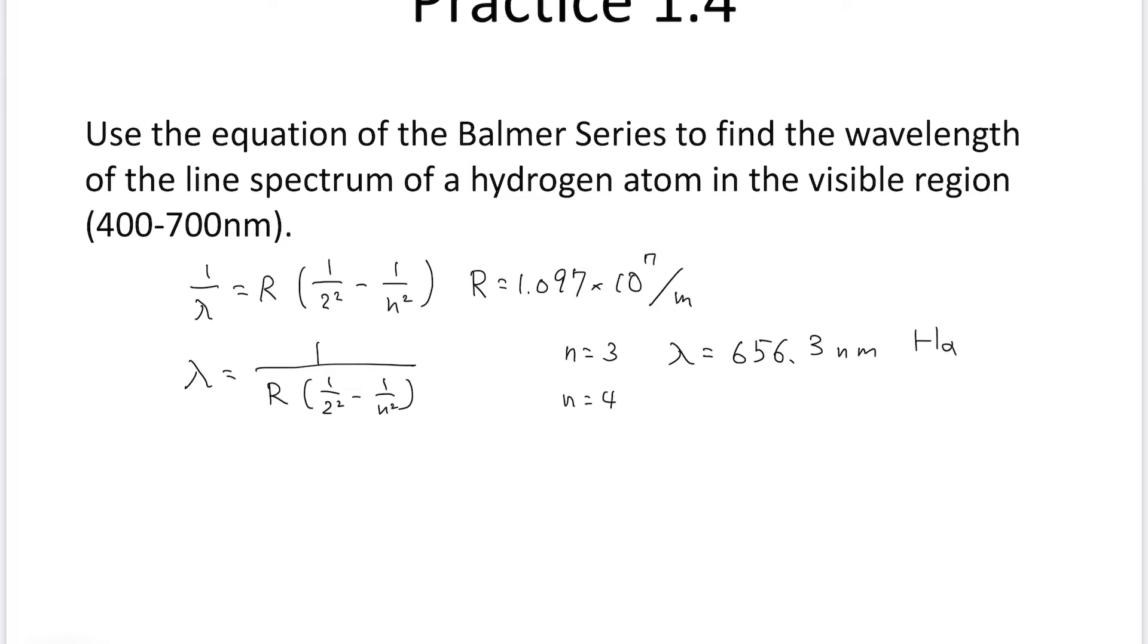If you substitute n equal to 4, lambda equals 486.2 nanometers. This is H beta.